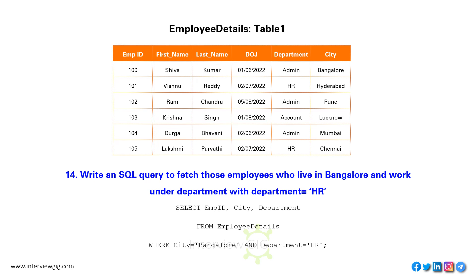Write an SQL query to fetch those employees who live in Bangalore and work in the HR department. SELECT employee_ID, city, department FROM employee_details WHERE city = 'Bangalore' AND department = 'HR'.